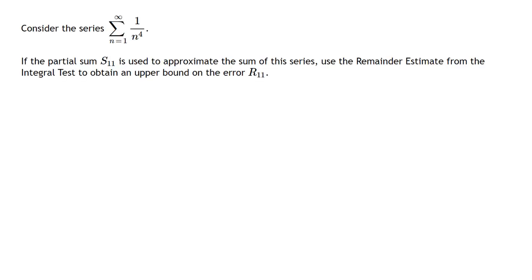So for this first problem, we're given a series, the sum of 1 over n to the 4th, and we're told that we're using the partial sum S11 to approximate the sum of the series. We want to use the remainder estimate to obtain an upper bound on the error R11.